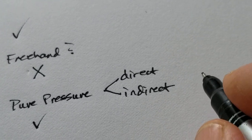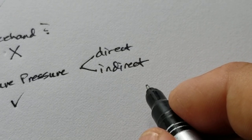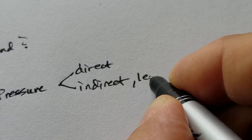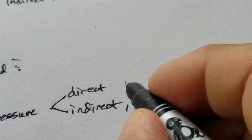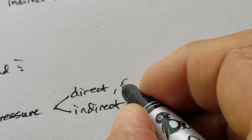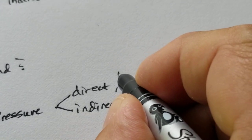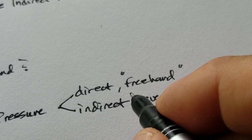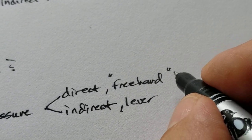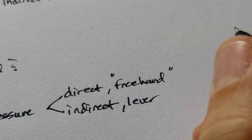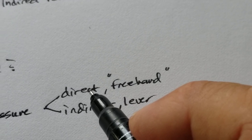Indirect pressure usually means that you're using a lever. Direct pressure is what I call freehand. That's probably not a good description, but it's just directly applied by hand with a pressure flaker.